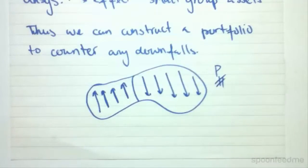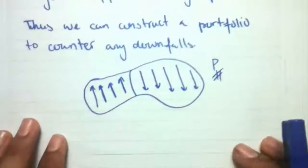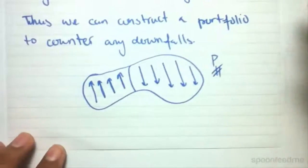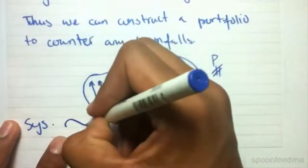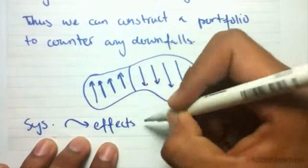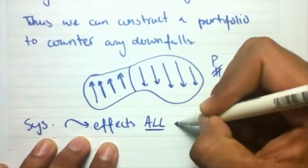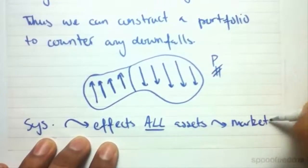So that's the explanation for unsystematic risk. Systematic risk, on the other hand, we learned that it affects all assets. It's related to the market. It's market risk.